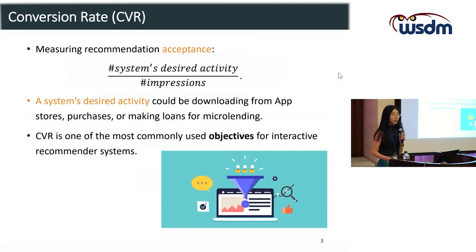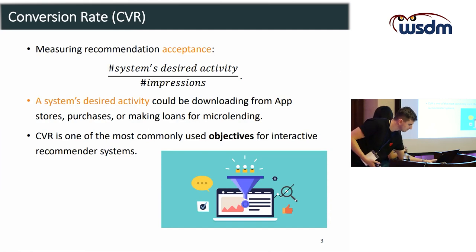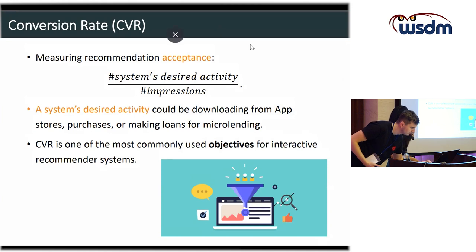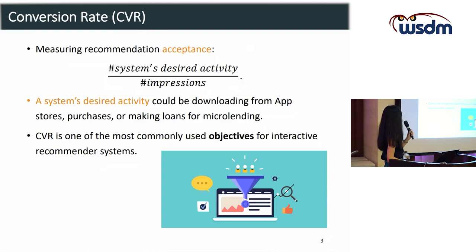One particular utility defined for IRS is the conversion rate. It measures the recommendation acceptance, which is the ratio of the number of users performing the system's desired activity to the number of impressions. The system's desired activity could be downloading from app stores, purchases, or making loans for microlending.